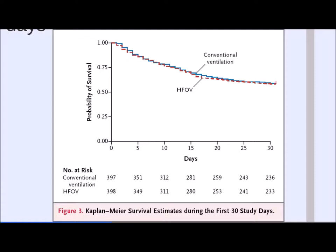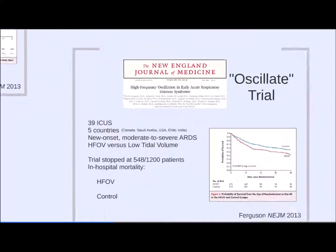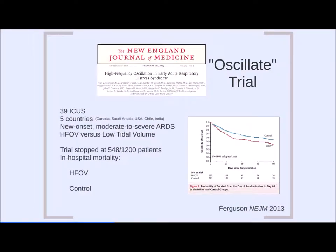The OSCAR results showed mortality curves for conventional ventilation and the oscillator essentially overlapping at 30 days — nearly equivalent outcomes. This was almost a defeating result for oscillator advocates, but it does show the oscillator is at least equivalent to conventional mechanical ventilation.